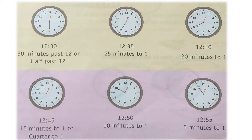In the last picture, the minute hand is at eleven. Five more minutes from 50 gives 55 — or you can multiply 11 by 5, and 11 fives are 55. So the time is 12:55, and you can say it is 5 minutes to one.